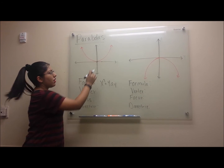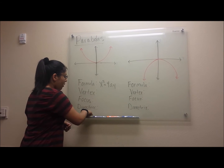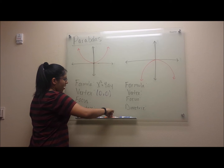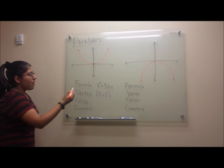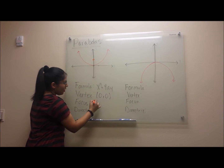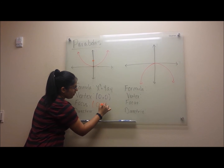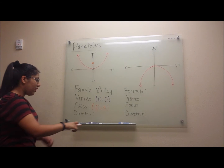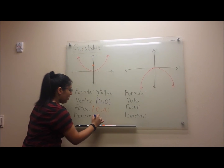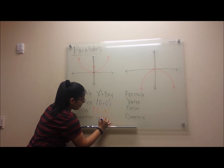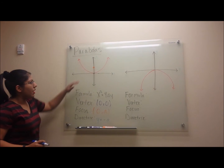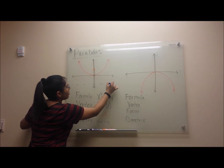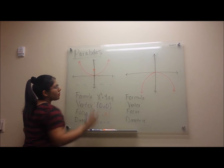The vertex, as we mentioned earlier, is at the origin, so our vertex will be 0, 0. Our focus for this type of graph will be at the point 0, a — you will get 'a' from your equation. Then your directrix will be y equals negative a. Negative a means it will be down here. The same distance from here will be the same distance from here.